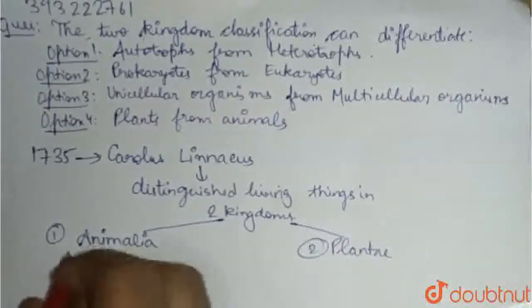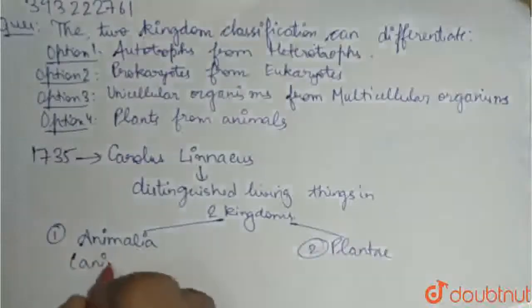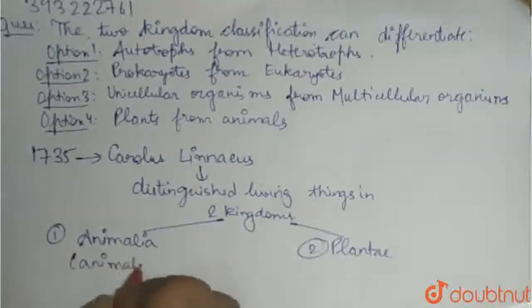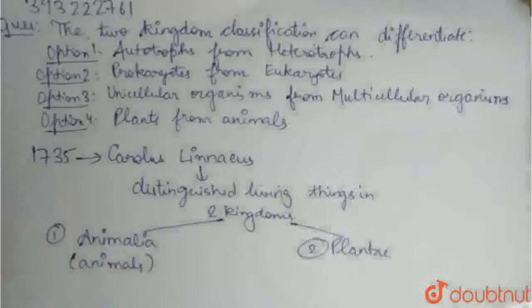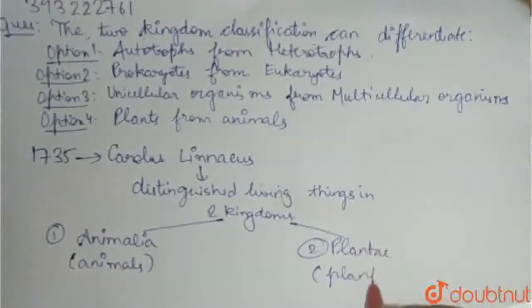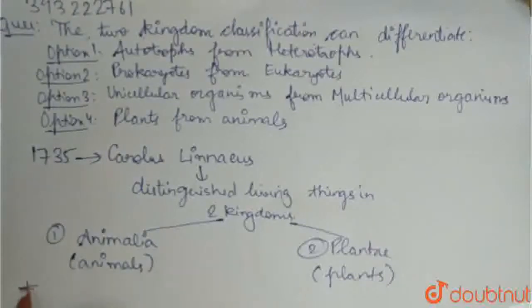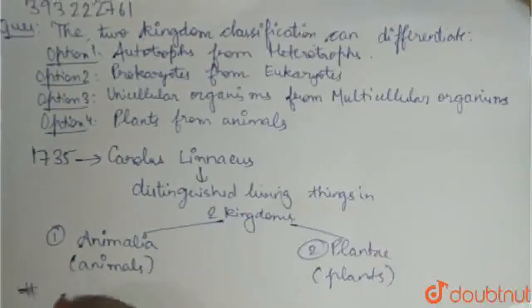Animalia stands for animals and Plantae stands for plants. These were classified on the basis of nutrition and locomotion.